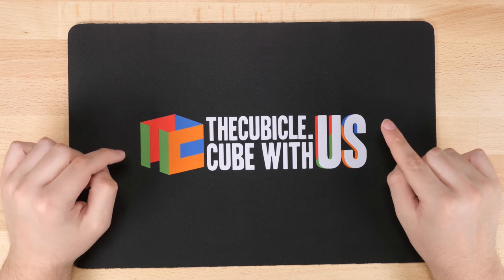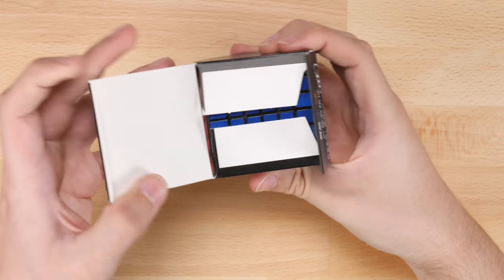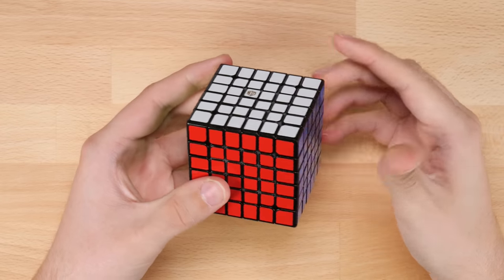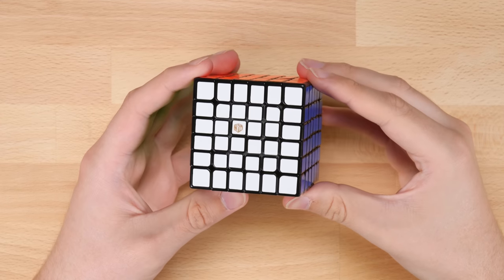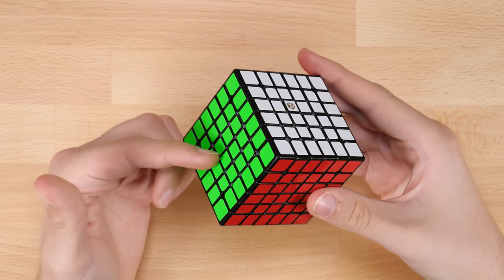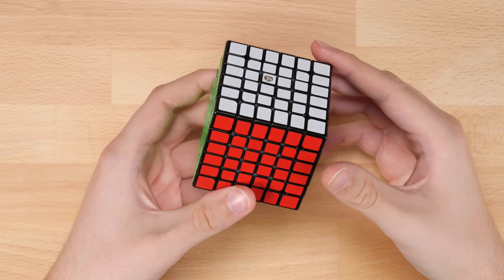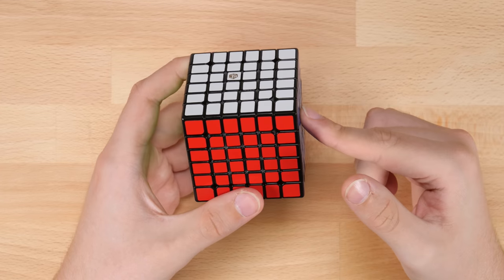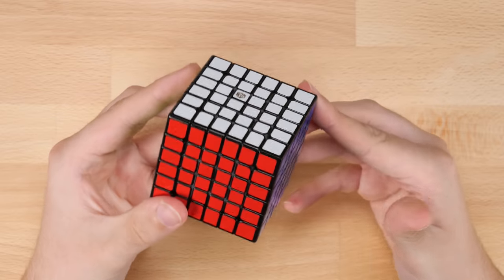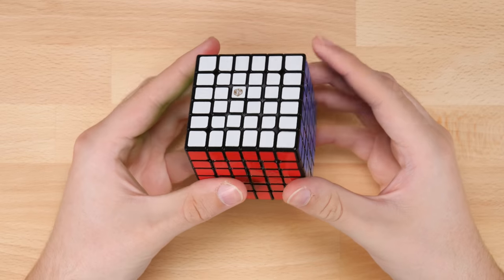Let's go ahead and move on now to the six by six. Alright, so this is the X-Man Shadow M six by six, the only six by six from X-Man. This is the stock magnetic one. So it comes with magnets from the factory. It costs $50. There's also a non-magnetic version for $34. So I'm pretty excited to check out this puzzle. I've heard some really great things about it. So let's go ahead and do some turning.